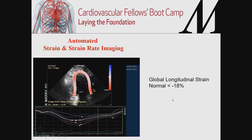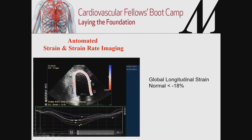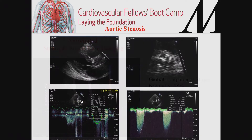Strain is another advance in echocardiography — we measure the change in length of myocardial fibers. Whenever the myocardium contracts, the fibers shorten, and strain measures that change in diameter and length. Normal strain is less than minus 18 percent. This patient has a severely reduced global longitudinal strain, as we can see here.